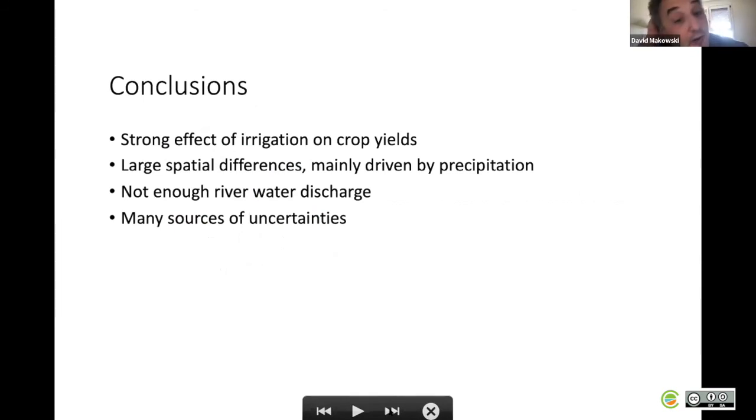In conclusion, there is a strong effect of irrigation on crop yields, around 30% with some uncertainty. Large spatial differences, mainly driven by precipitation.